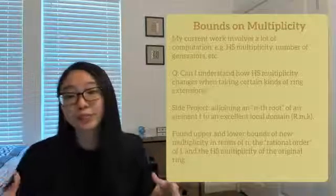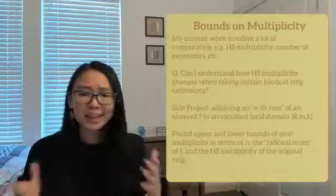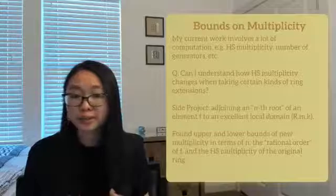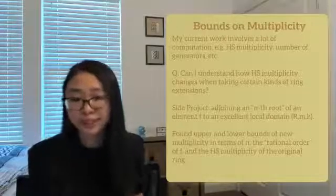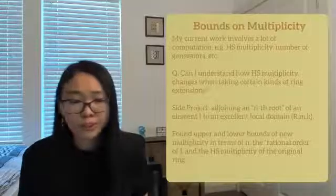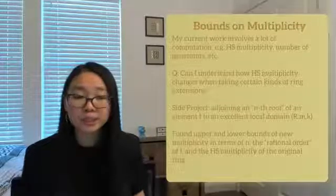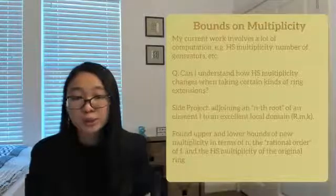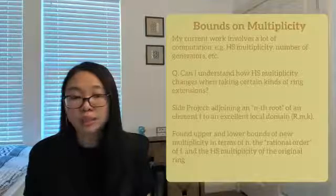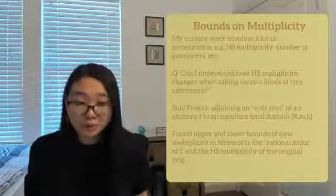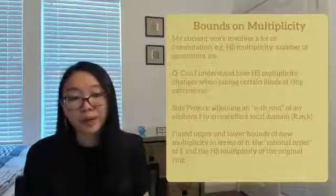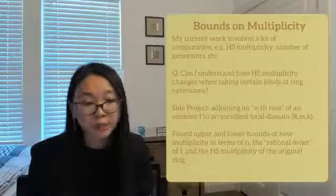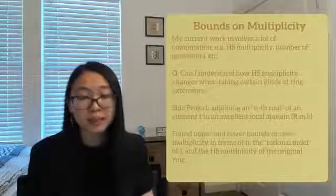If I use that class of rings to construct a new class of rings, can I understand how Hilbert multiplicity changes when I'm taking certain kinds of ring extensions? One side project that I worked on was adjoining an nth root of an element f to an excellent local domain, and I was able to find upper and lower bounds for the new multiplicity in terms of n, the rational order of f, and the Hilbert Samuel multiplicity of the original ring.